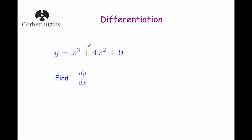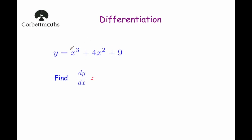Our next question: y equals x cubed plus 4x squared plus 9, and we've been asked to find dy by dx. We've got three terms, so we differentiate each one separately. Differentiating x cubed: bring the 3 down gives 3x squared. Differentiating 4x squared: 4 times 2 is 8, giving plus 8x (reducing the power by 1 gives x to the 1, so just 8x). Differentiating 9, which is a constant, gives 0. So dy by dx equals 3x squared plus 8x.